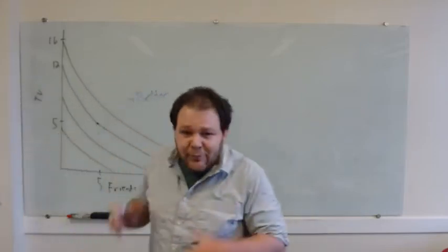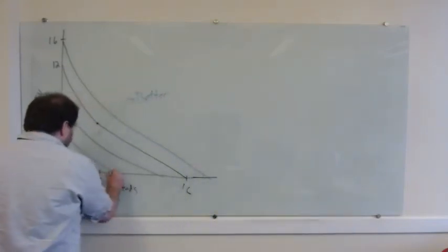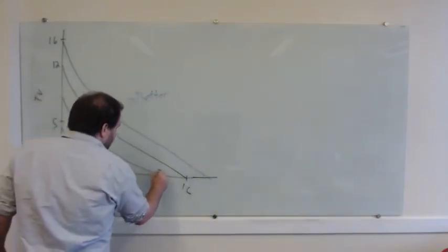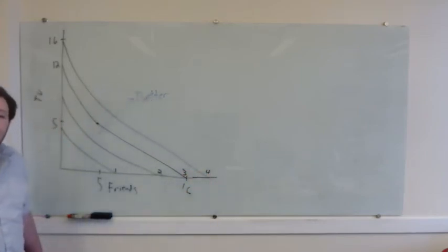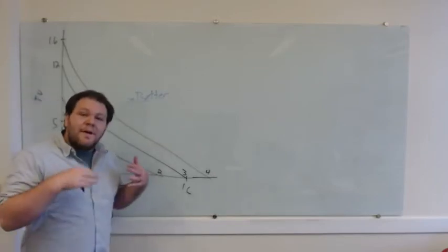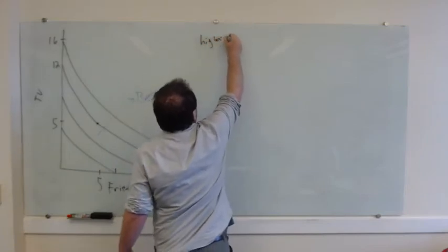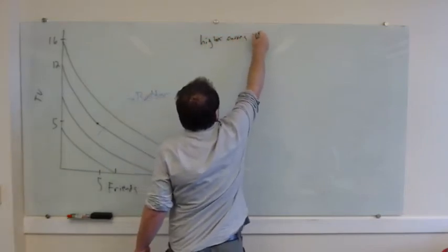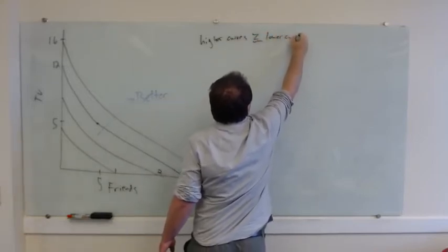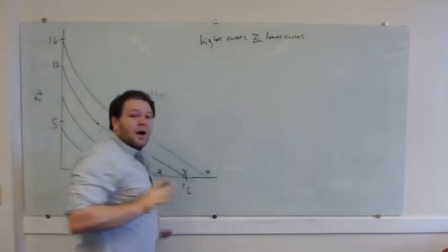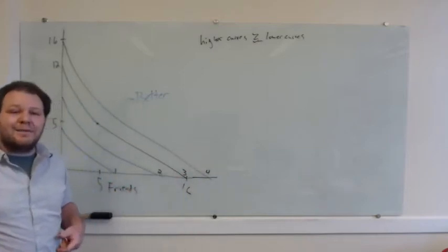To keep track of all these different curves, I'm going to number them. I'll say this is curve one, this is curve two, this is curve three, this is curve four. Higher-numbered curves are preferred to lower-numbered curves. All I've done is taken what we already knew from the graph and labeled the curves so we can keep track of them a little better.